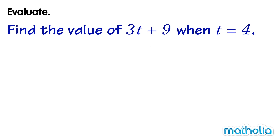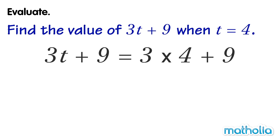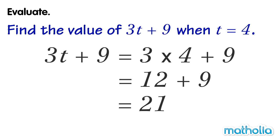Find the value of 3t plus 9 when t equals 4. If we put 4 in place of t, we get 3t plus 9 is equal to 3 times 4 plus 9. 3 times 4 equals 12. 12 plus 9 equals 21. So when t equals 4, 3t plus 9 equals 21.